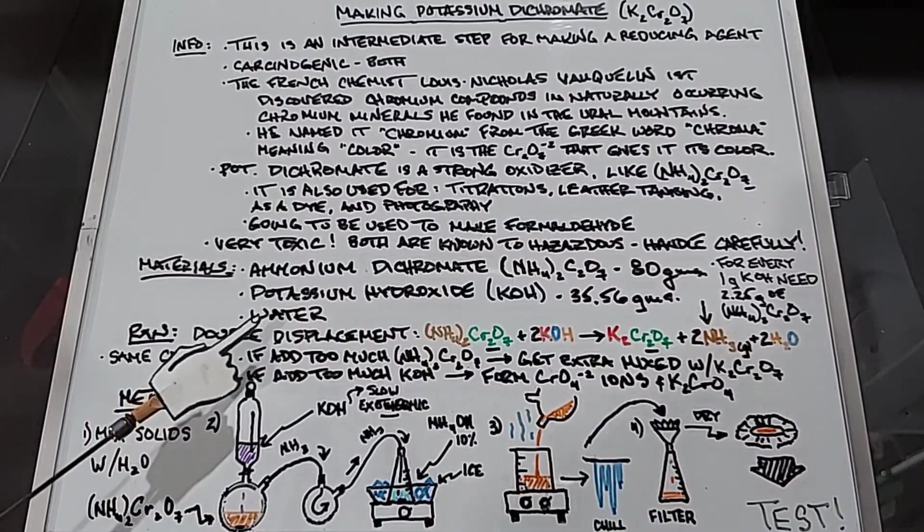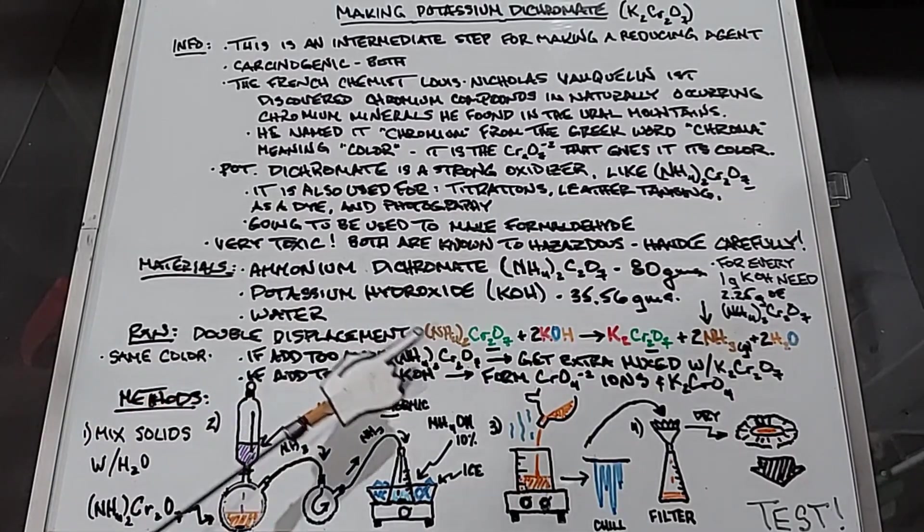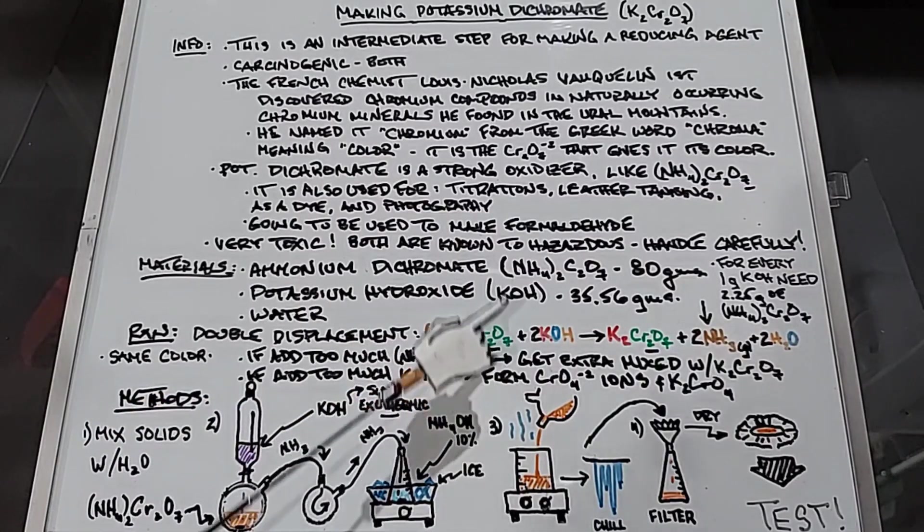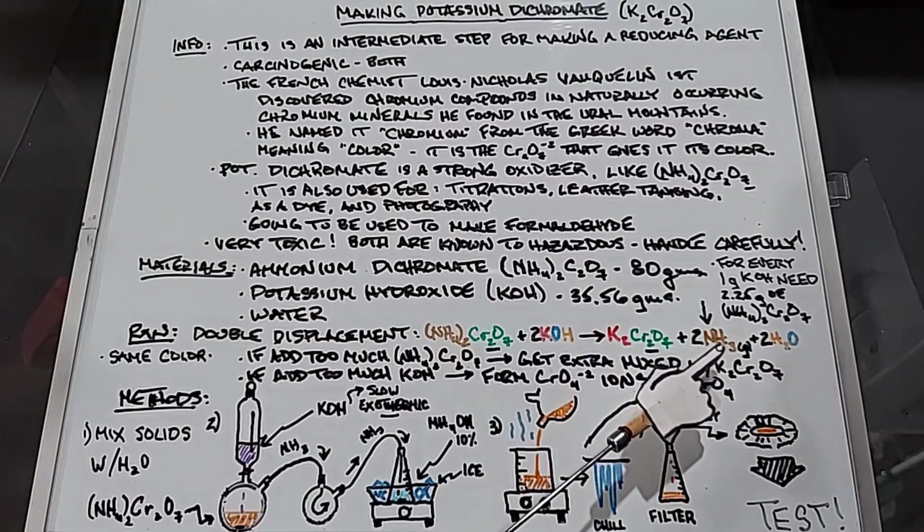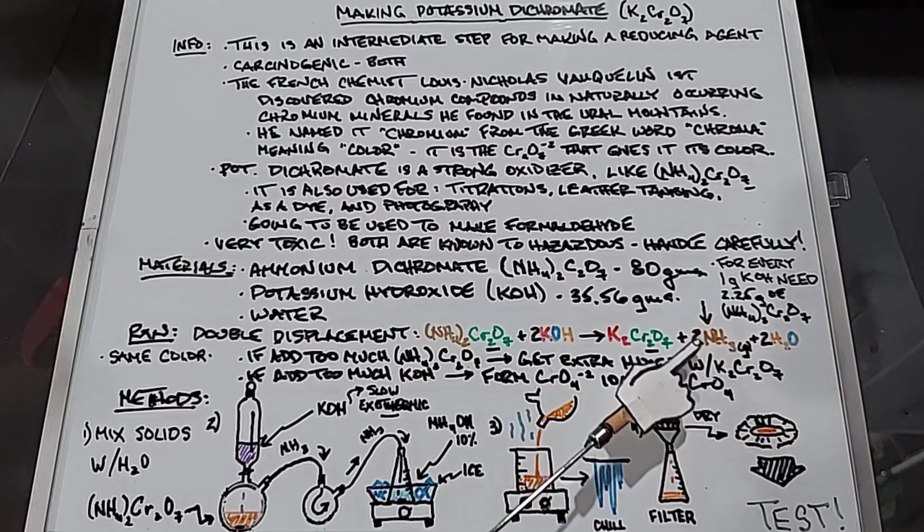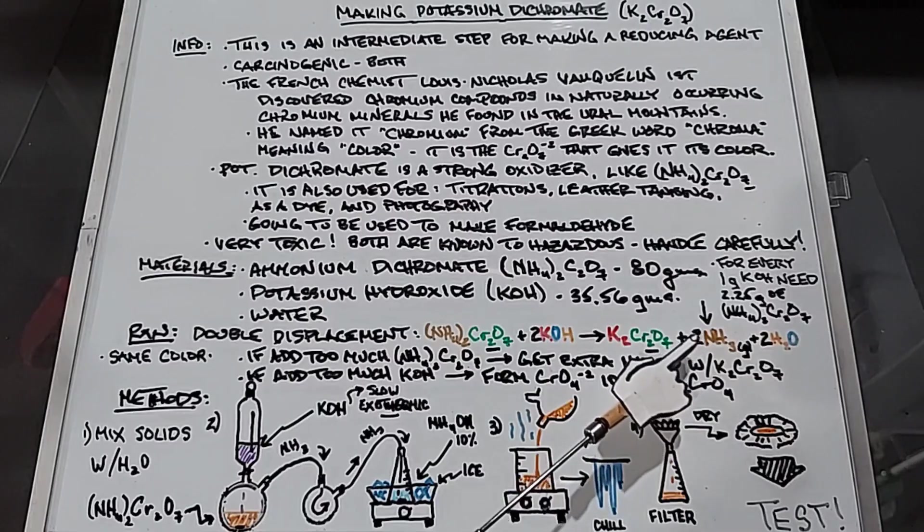The reaction for what we're doing is a double displacement reaction: ammonium dichromate plus 2 potassium hydroxide yields potassium dichromate plus 2 ammonia gas plus 2 water. This ammonia gas is going to be released, and I don't want to waste it, so I'm going to try to use that to strengthen some ammonia solution that I already have.